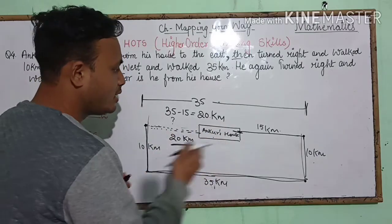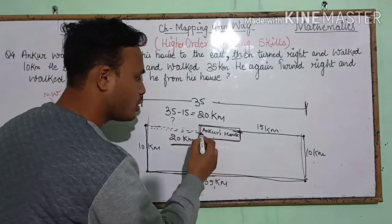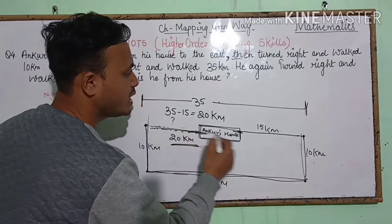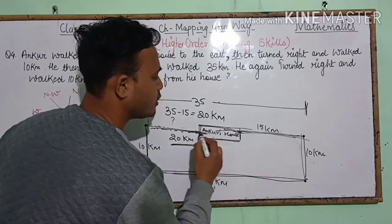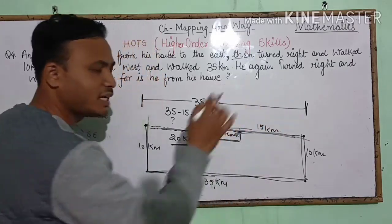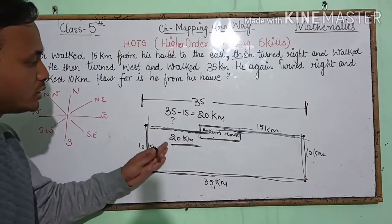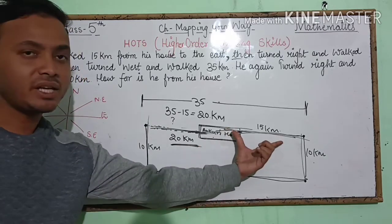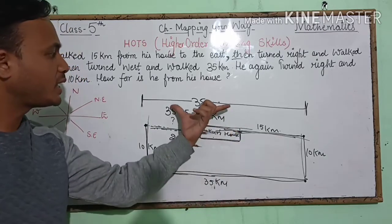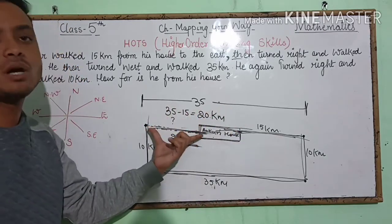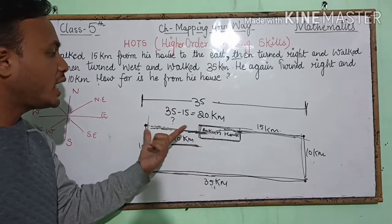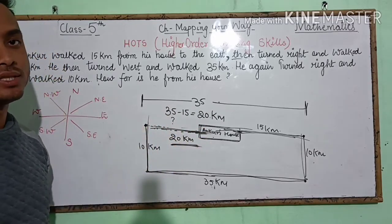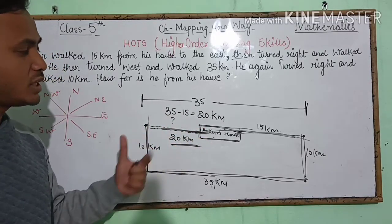I drew Ankur's house a little big in the diagram, so just assume it's small. The dotted line of 20 kilometers and the 15 kilometers line are clear. The full line is 35 km; subtract 15, and 20 km remains — that is the distance between Ankur's house and his last point.